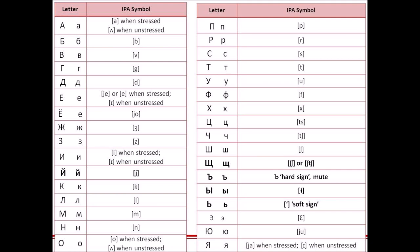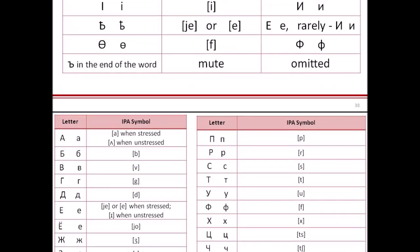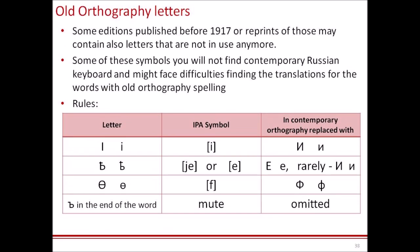There are just a few sounds that require additional explanation. They are marked in bold font in this chart. Some editions published before 1917, or reprints of those, may contain letters that are not in use anymore. You will not find these symbols in contemporary Russian language or on a contemporary Russian keyboard, and you might face difficulties finding translations for words with old orthography spelling. In the chart below you can see those letters and how they translate into contemporary orthography. However, if you use our study materials, you will not face this problem.